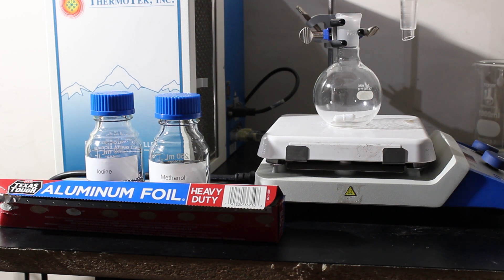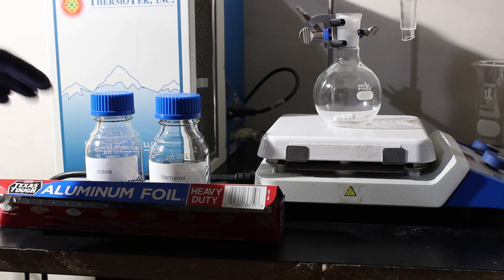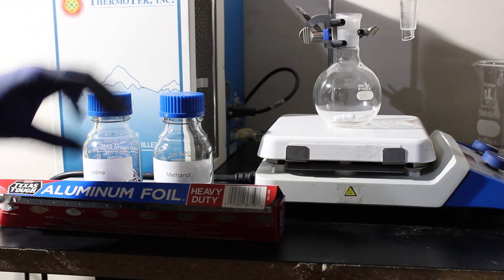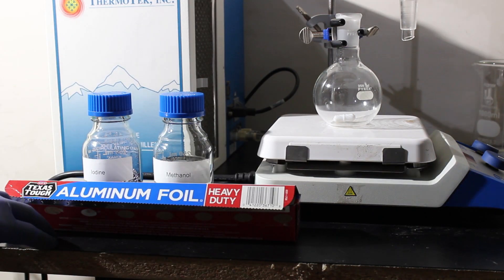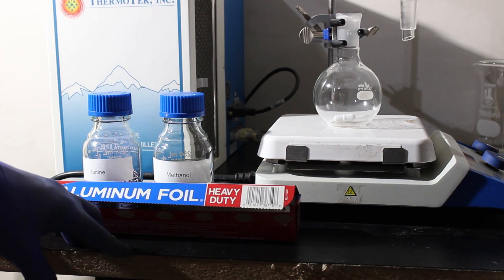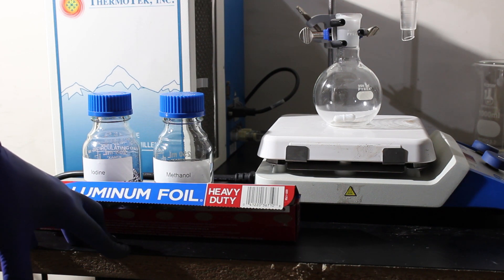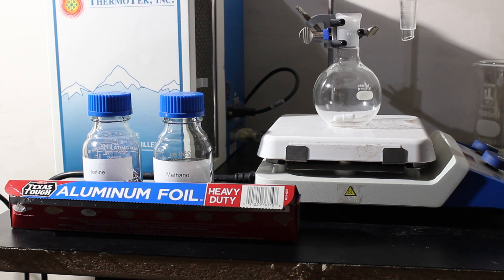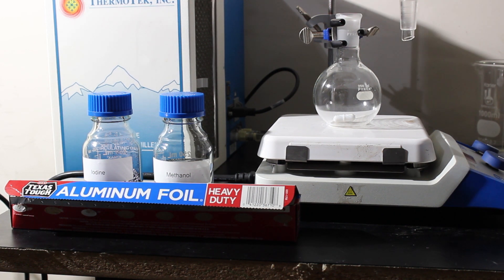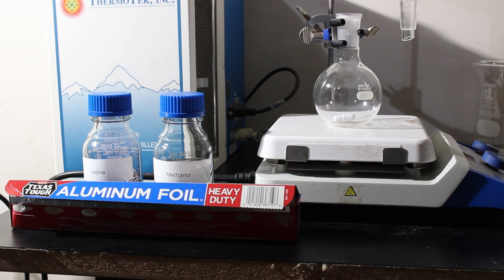The idea is we'll be trying to react iodine and methanol. Supposedly you can use aluminum foil as the catalyst rather than using phosphorus, which is the typical catalyst for this reaction. I'll be measuring out and combining these in a round bottom flask, placing it on reflux for a while, then doing a distillation to isolate the reaction products.